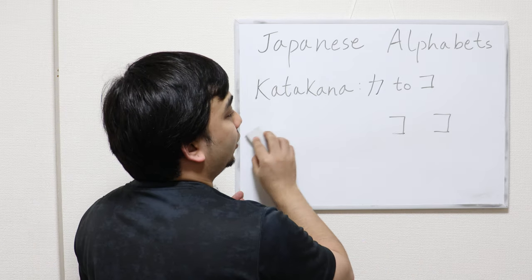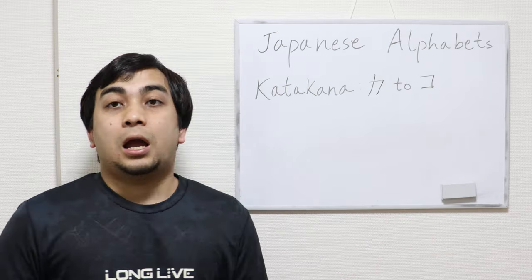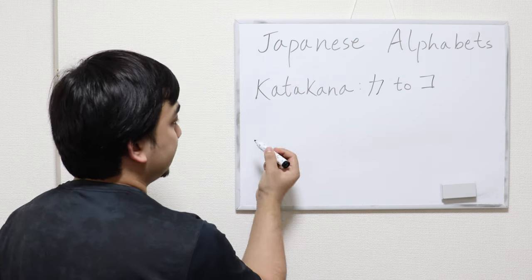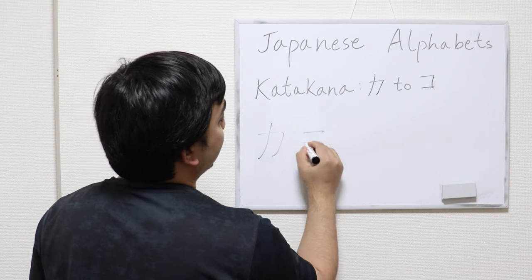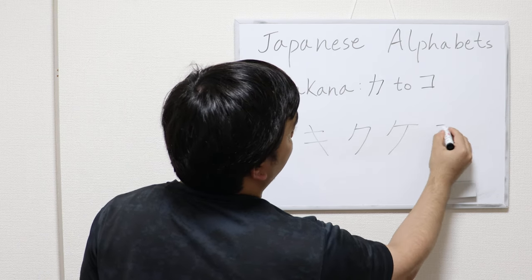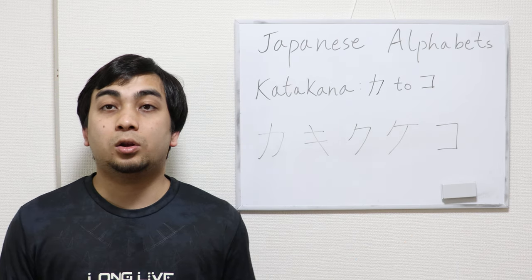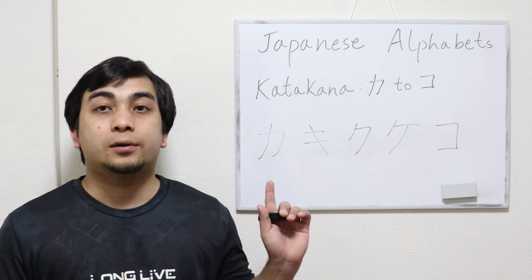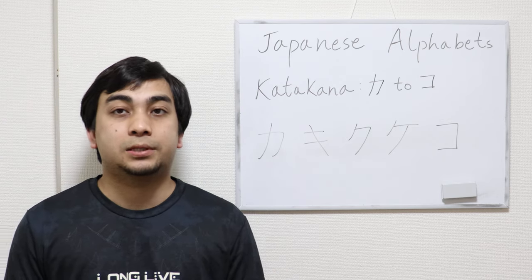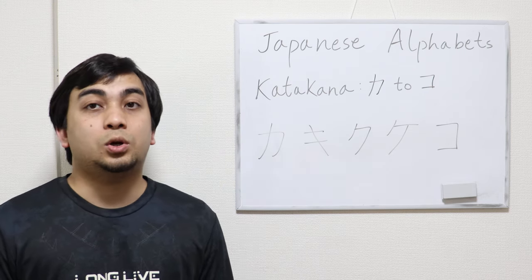After finishing ka, ki, ku, ke, ko five to ten times each, I want you to write ka, ki, ku, ke, ko in sequence. Try not to look up as you write, and try to pronounce it as you write. Write it five to ten times. Okay, today we finished the second row.